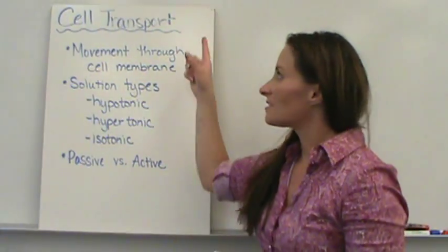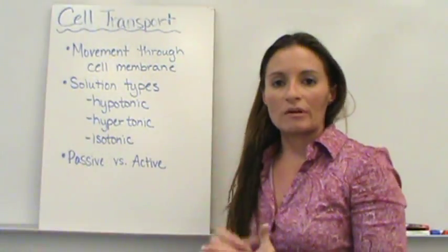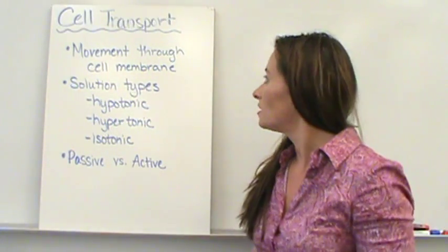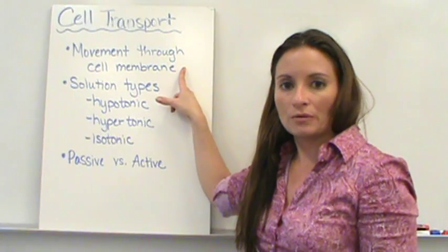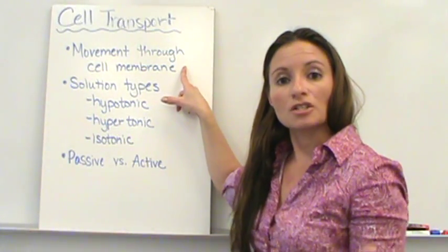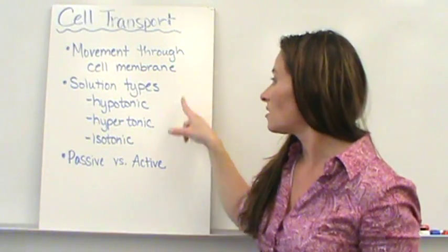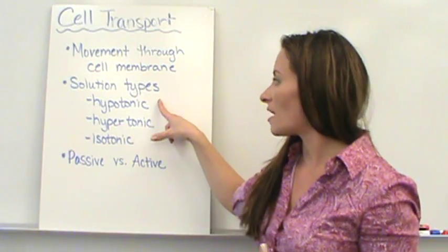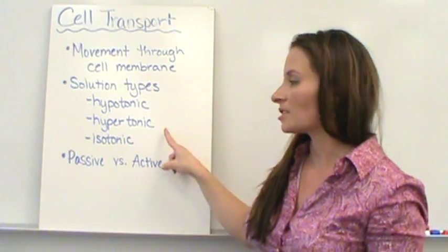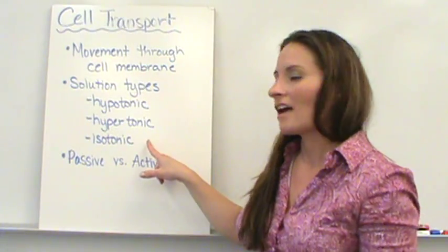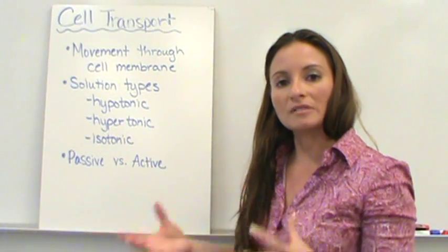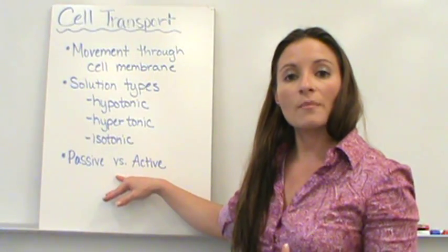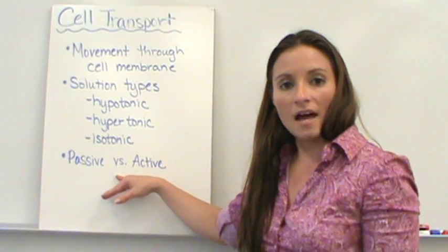Welcome to today's lesson on cell transport. Today we're going to talk about how things get into and out of the cell — specifically, movement through the cell membrane, because the cell membrane controls what goes in and out. We're going to cover three different types of solutions: hypotonic, hypertonic, and isotonic, and what happens to a cell in those conditions. Finally, we'll talk about passive versus active transport.